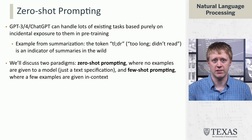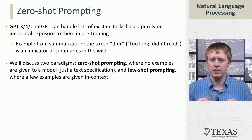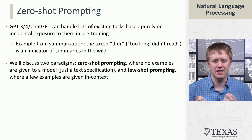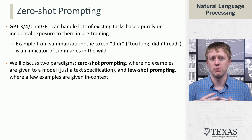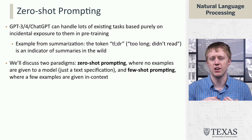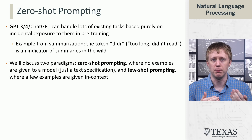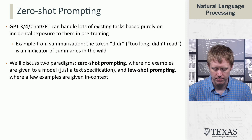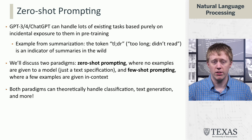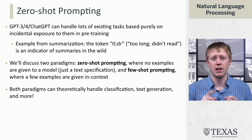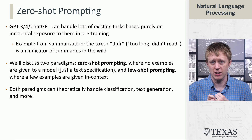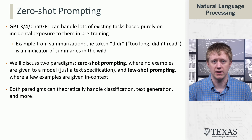Given that we have the ability to do these other tasks, or we've at least seen them before, can we elicit these from the model? Can we get our language model to do something for us just by giving it a text specification, or by giving it examples like we've talked about previously? These are both very flexible paradigms that can handle classification tasks, text generation, sequence-to-sequence tasks, and other things.